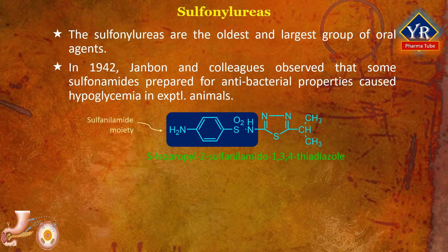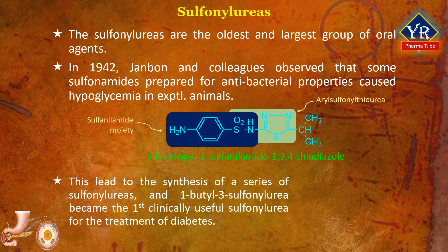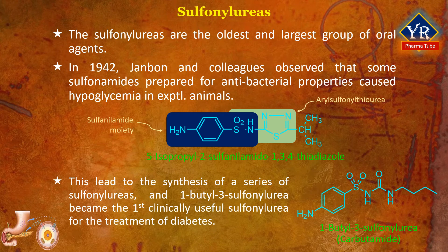Further, the structure was found to possess an aryl sulfonyl thiourea type of arrangement. This led to the synthesis of a series of sulfonylureas, and 1-butyl-3-sulfonylurea, i.e. carbutamide, became the first clinically useful sulfonylurea for the treatment of diabetes. The drug was later withdrawn because of its adverse effects on the bone marrow, but it provided a lead for the development of other useful drugs.